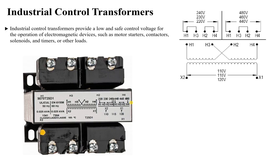This configuration is similar to the first, just with a different wiring arrangement, to obtain the same output. For example: 110/115/120V output — if you have 240V or 480V input and use these two configurations, you get 120V. With 460/230V you get 115V, and with 440/220V you get 110V.